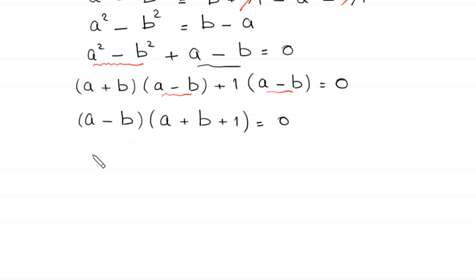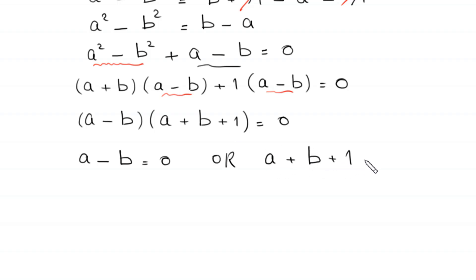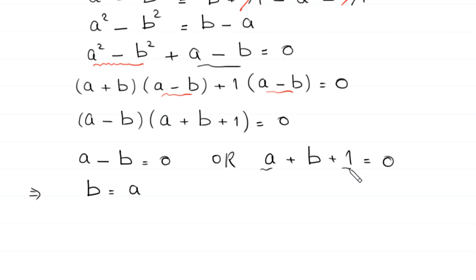Since a minus b is a common factor, we factor it out, giving (a minus b)(a plus b plus 1) equals 0. From the first factor, moving negative b to the right hand side, this implies b is equal to a. From the second factor, moving a and 1 to the right hand side, this implies b is equal to negative 1 minus a.